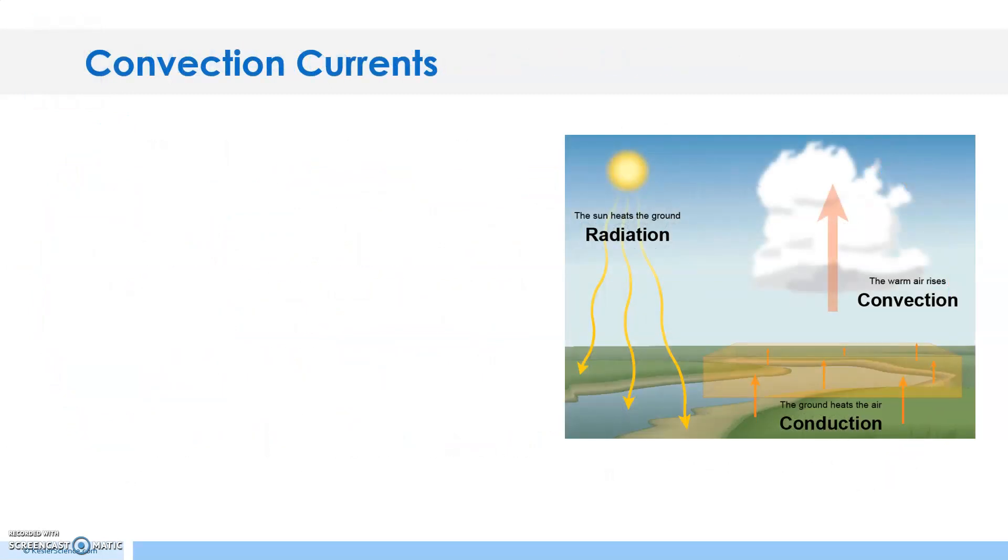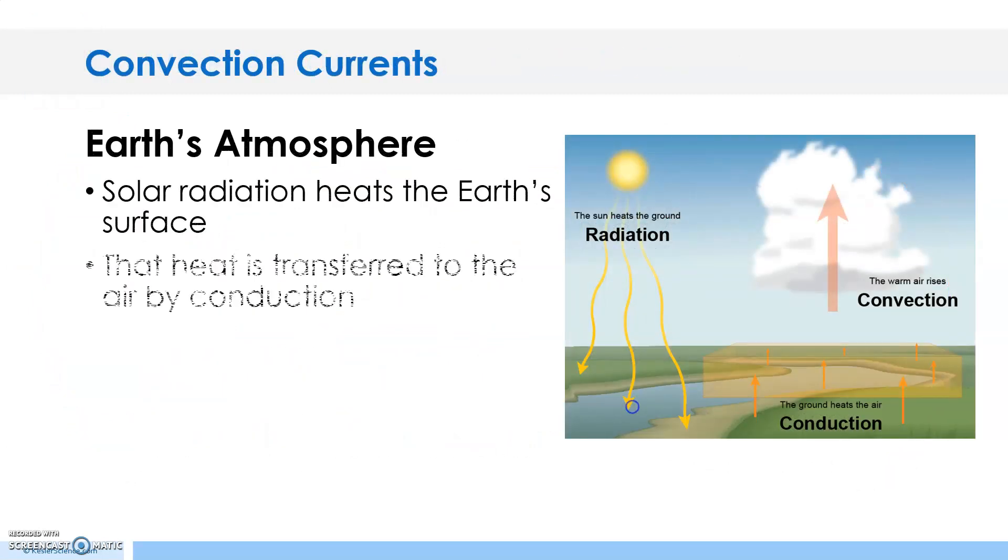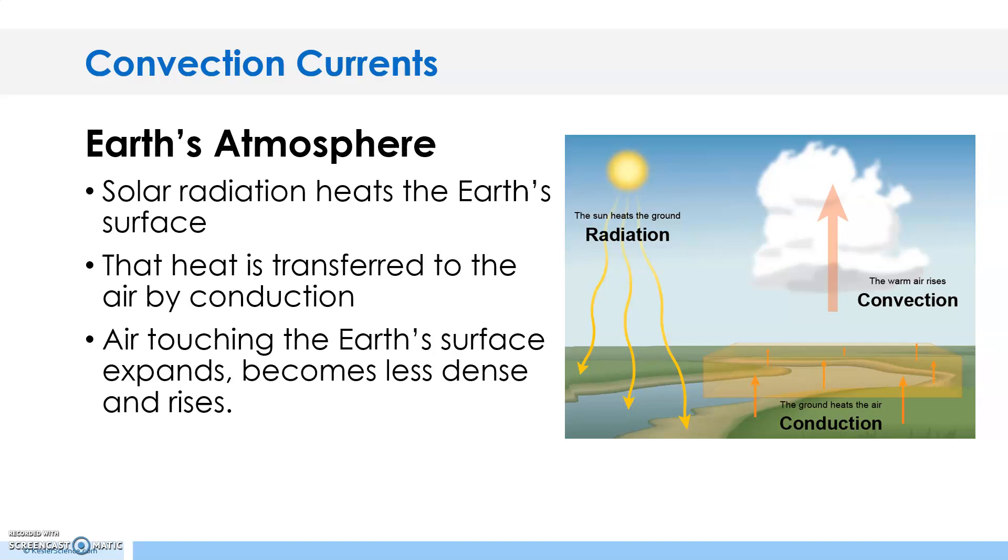Convection currents also occur in the Earth's atmosphere. Solar radiation heats the Earth's surface. That heat is transferred to the air by conduction. Air touching the Earth's surface expands, becomes less dense, and rises. The Sun heats the ground and that warm air will rise.